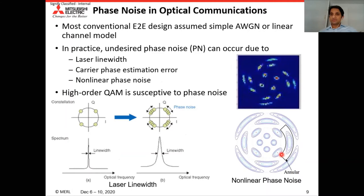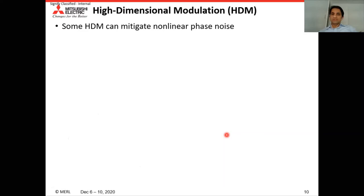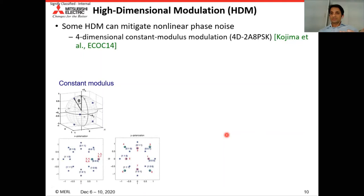Higher-order QAM is susceptible to phase noise. Methods used to mitigate phase noise in optical communication include high-dimensional modulation, which is one of the most important methods. It not only helps with noise tolerance but is also useful for mitigating nonlinear distortion in fiber lines. Some methods used for high-dimensional modulation are four-dimensional constant modulus modulation, eight-dimensional Grassmann modulation, and eight-dimensional X constellation.